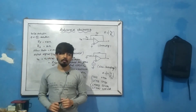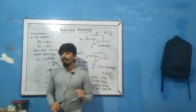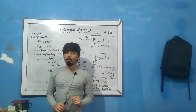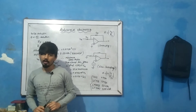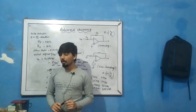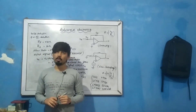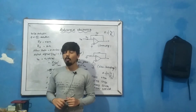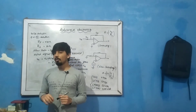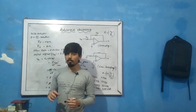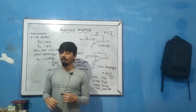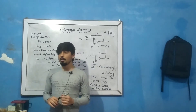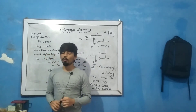Slew rate is the maximum rate at which the output voltage of an op-amp can change. It measures how fast the op-amp can respond. Slew rate is generally expressed in volts per second or volts per microsecond.